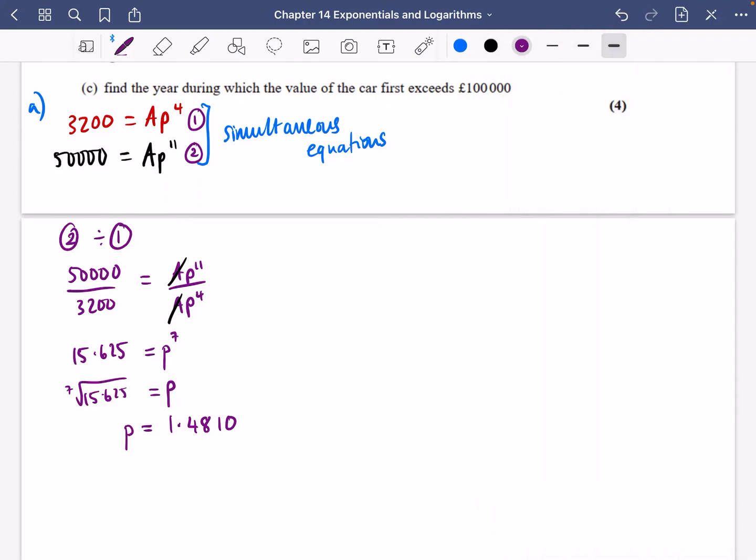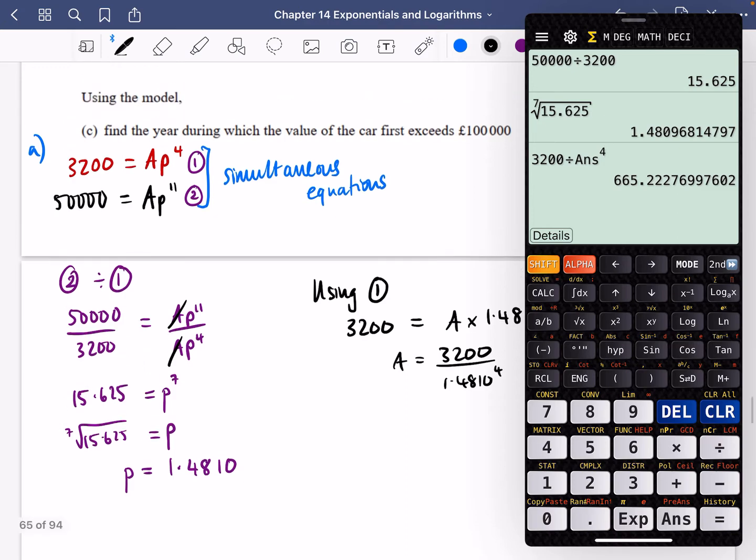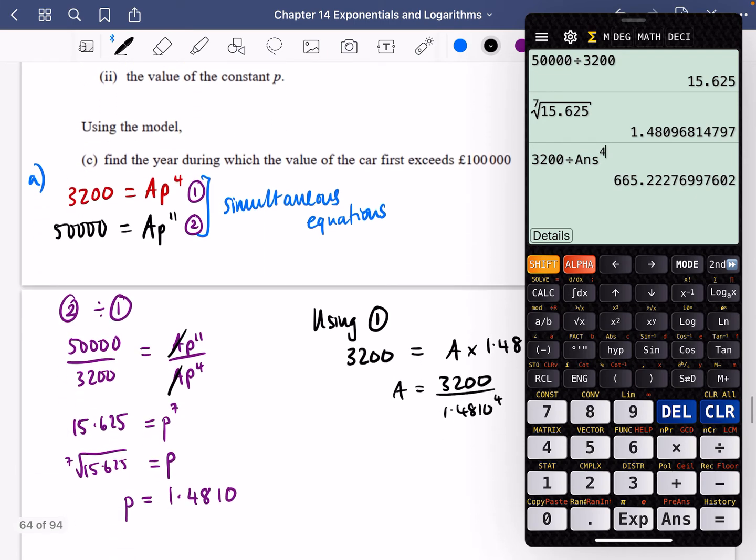Using equation 1, 32,000 = A × P^4, so A = 32,000 divided by 1.4810^4. Let me recalculate this.